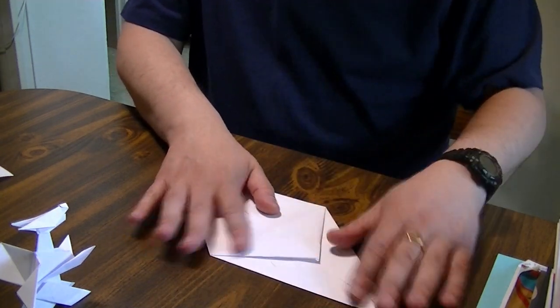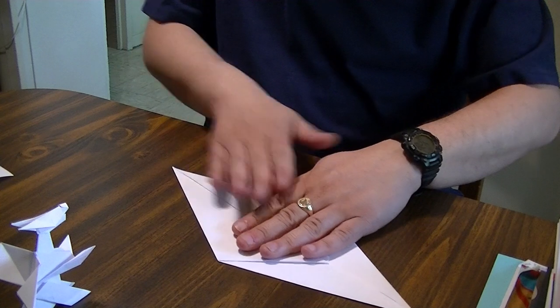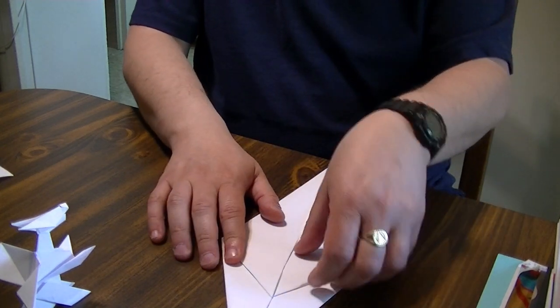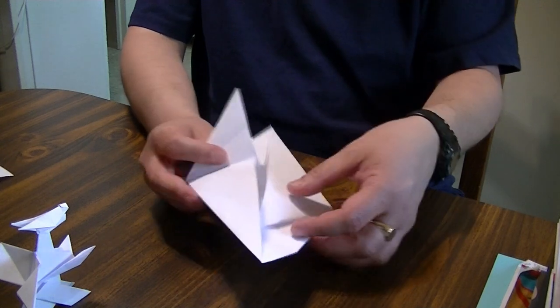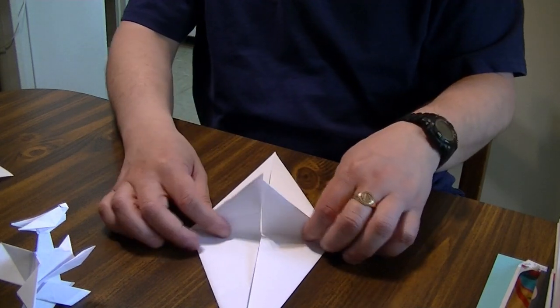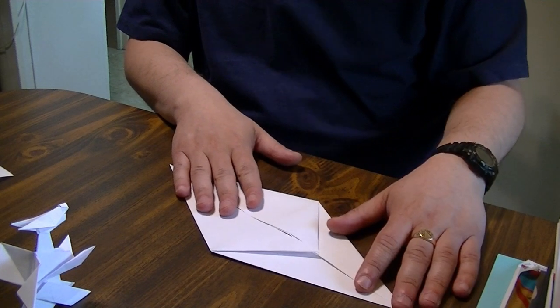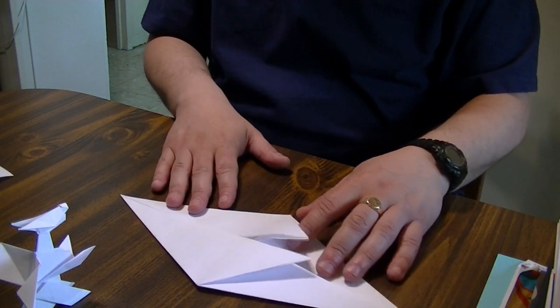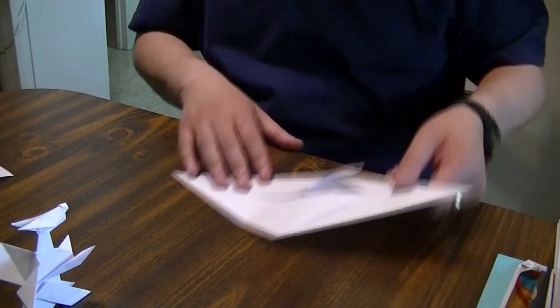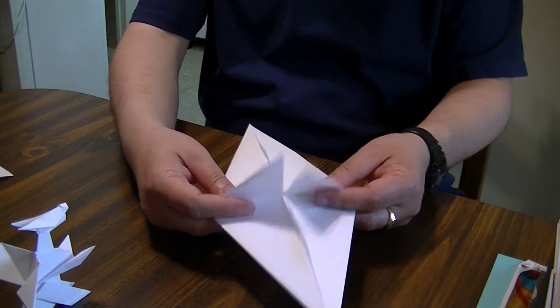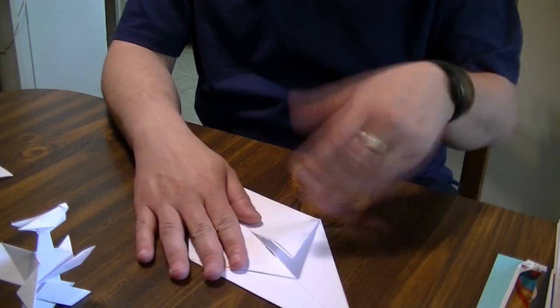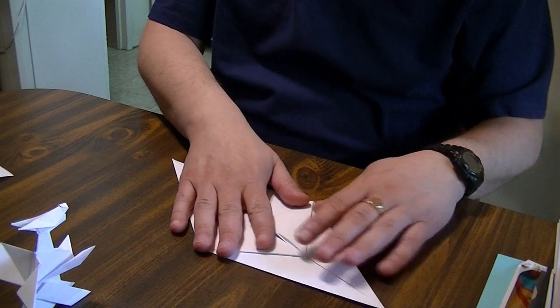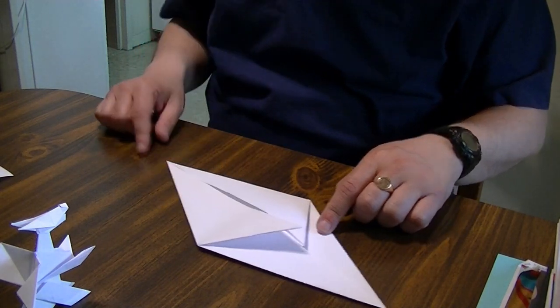Now this is, in origami we have what we call bases. Which is kind of like an origami form from which many other things are typically made. And this one, at least in the books that I used to read when I was a kid, is called the fish base. It's so called because it has a tail, it has a head, and it has two little fins. And a lot of fish based origami comes from this. Maybe if there's any interest I'll show you guys how to make a shark from this thing.